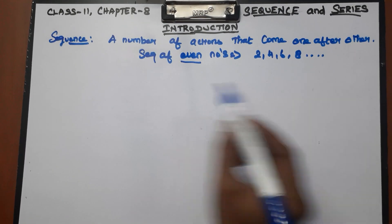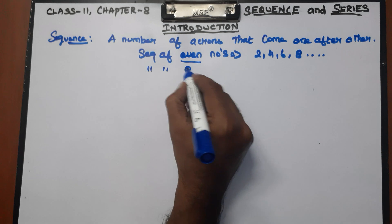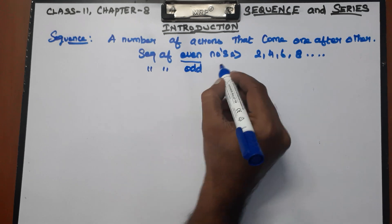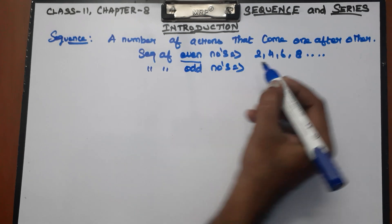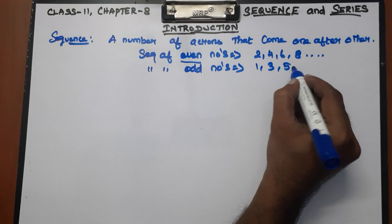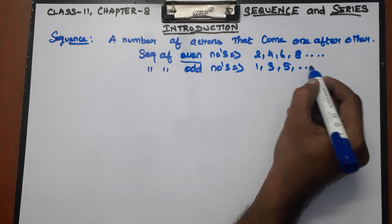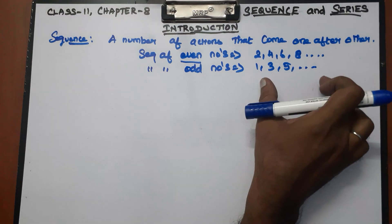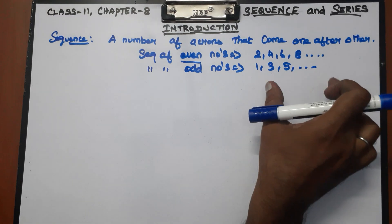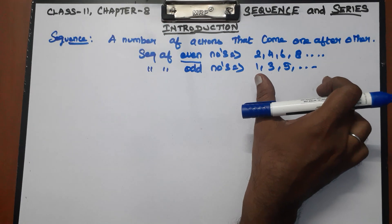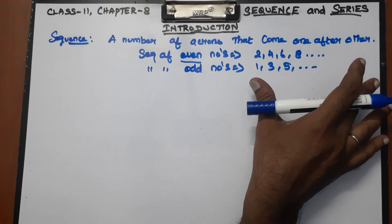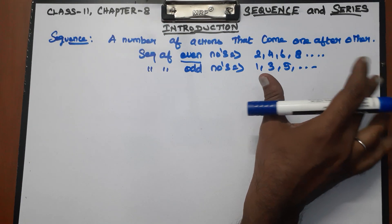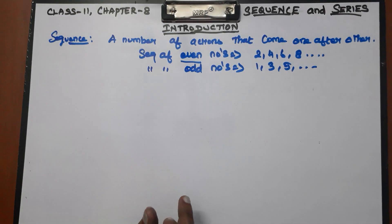Similarly, a sequence of odd numbers: 1, 3, 5. So this is a sequence of even numbers, and this is a sequence of odd numbers.